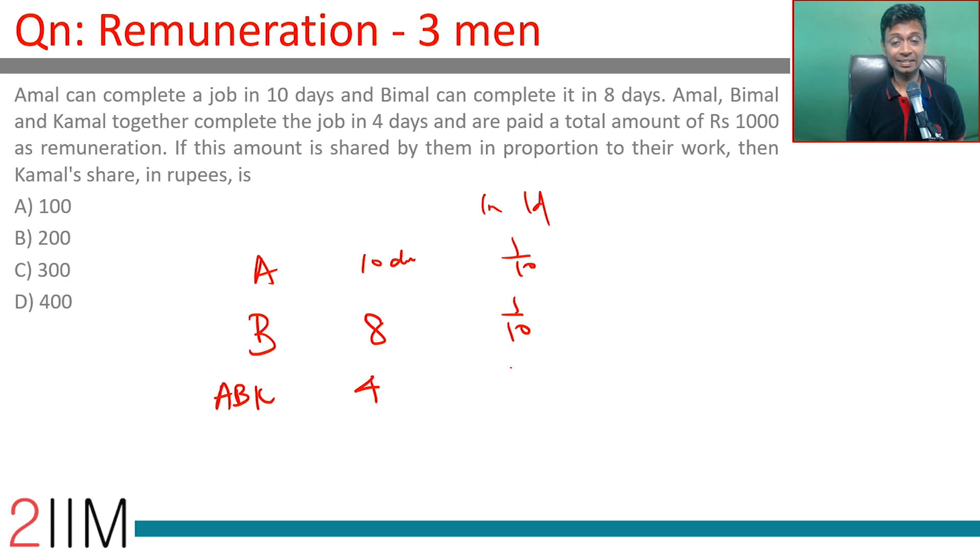Totally they can do 1 by 4. Kamal in one day can do 1 by 4 minus 1 by 8 minus 1 by 10, or 10 by 40 minus 5 by 40 minus 4 by 40. The LCM is 40, which equals 1 by 40.